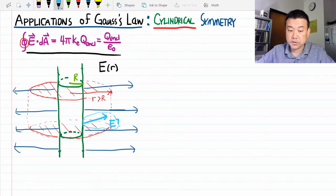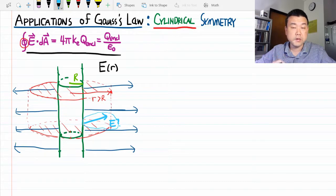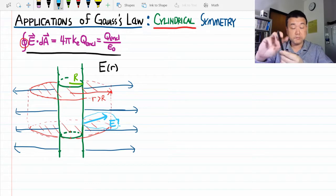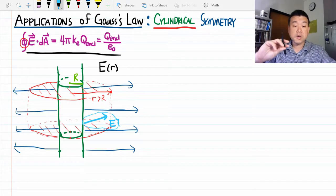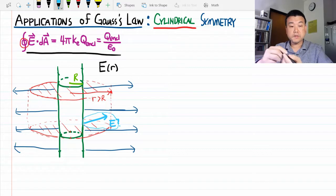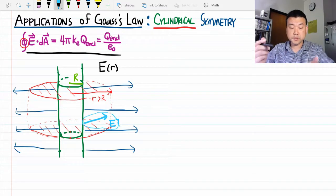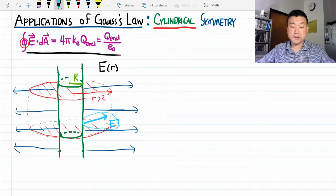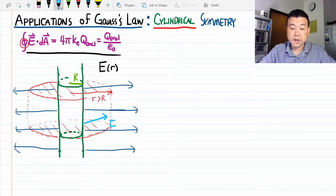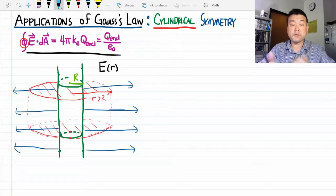What you can argue is: I have that reflection operation as a symmetry operation. You do reflection, nothing in the charge changes, but the electric field would go from pointing up to pointing downward. That's absurd and contradictory. So our initial assumption was wrong. Electric field can't point upward or downward; it has to point radially outward.